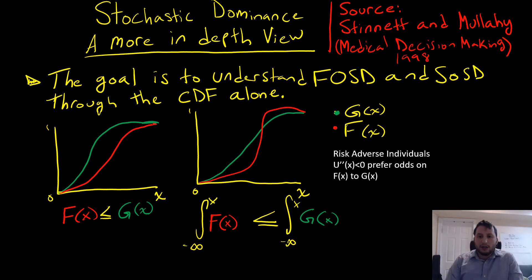What does this mean practically? For the risk-averse individual with a concave utility function, they're going to prefer the odds on F(x) compared to that of G(x).